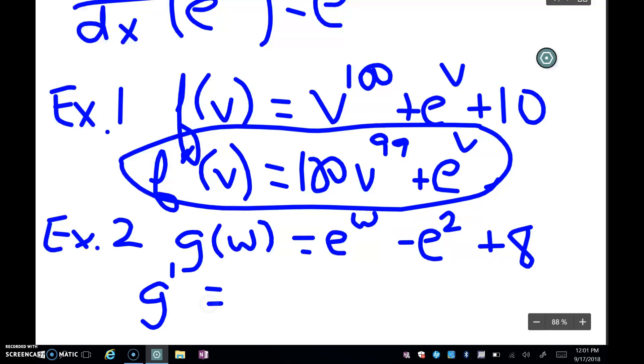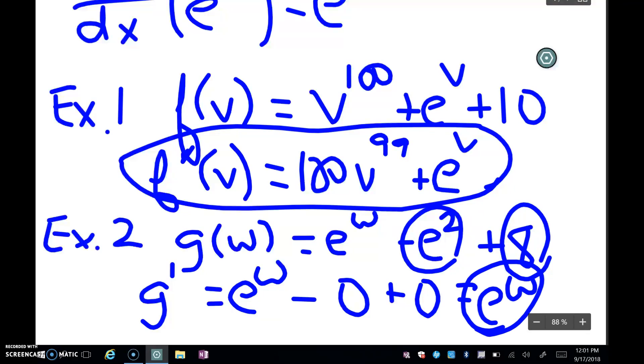So my derivative is e^w. Now, this next one is 0 because there are no variables in this problem. So that's a constant. 8 is also a constant. So that's another 0. So my final answer for this one is only e^w. That's the only problem that had a variable in it.